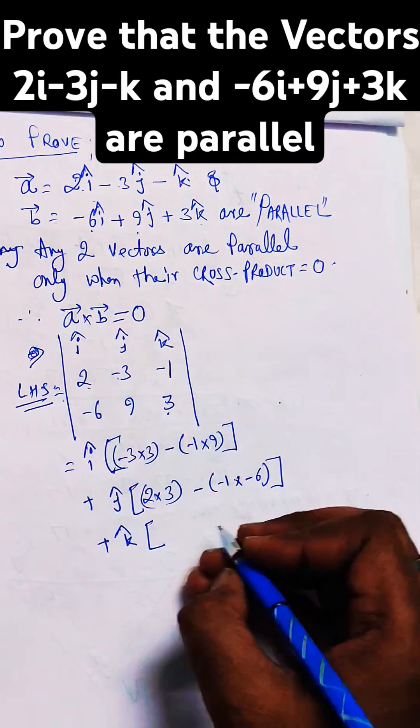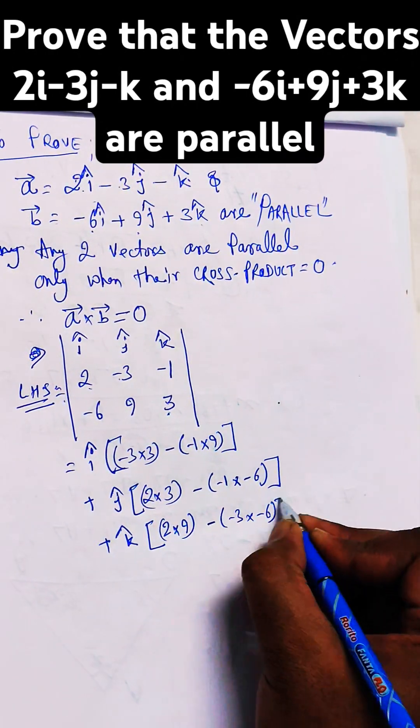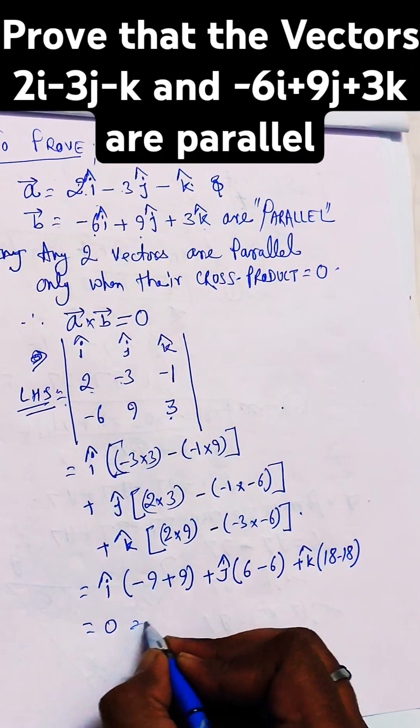We get i as zero, j as zero, and k as zero. That means A and B are parallel to each other.